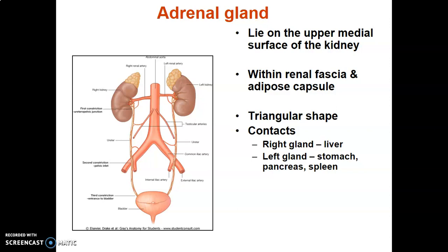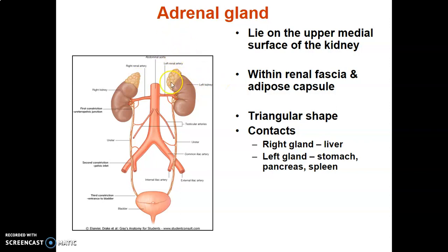The adrenal glands are usually on the superior pole and within the renal fascia and the adipose around the kidney. They usually contact the liver on the right side and on the left side they will contact the stomach, the pancreas, and the spleen around that region.